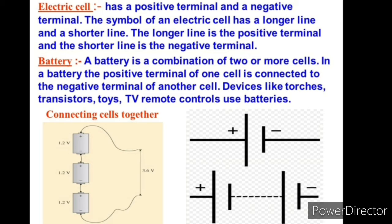In this diagram, if you see, this is one cell, this is one cell, and this is one cell. These cells are connected to each other to form a battery, and we represent the battery like this - two cells connected to each other to form battery.